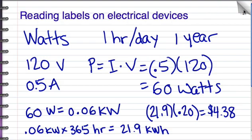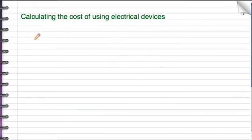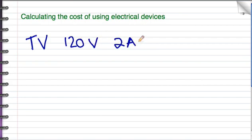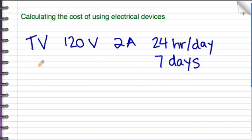I want you to do a sample problem. Let's say you use a television and you look on the label, and you see that it's 120 volts and 2 amps of current. And let's say you're on vacation and you watch TV 24 hours a day for a week. Obviously this isn't quite realistic, but 24 hours a day for 7 days, and I want you to figure out how much that costs if the electric company is charging you 20 cents per kilowatt hour. So pause the video and figure it out.